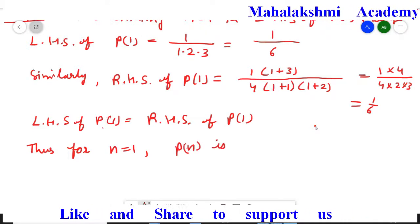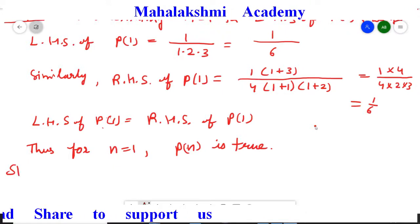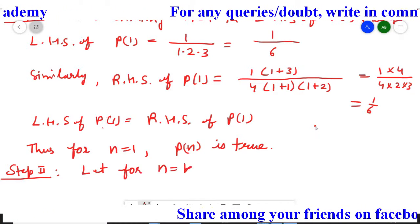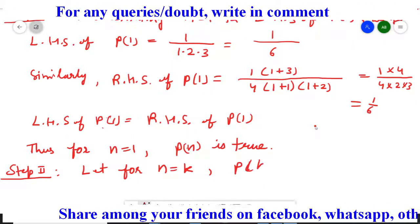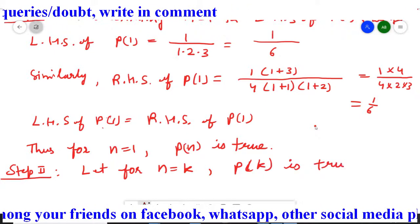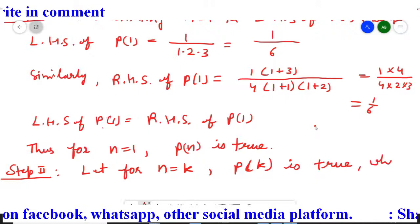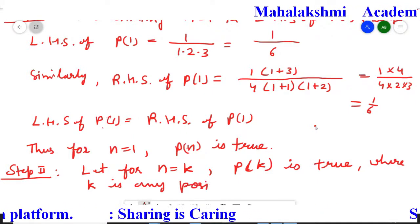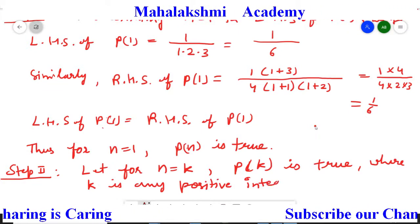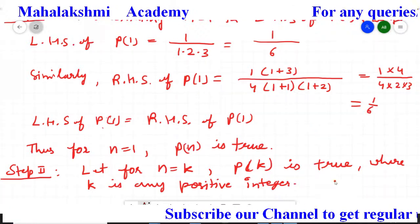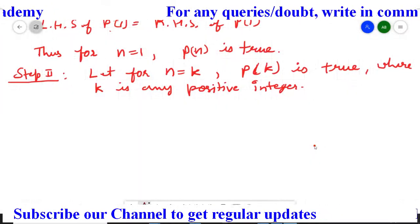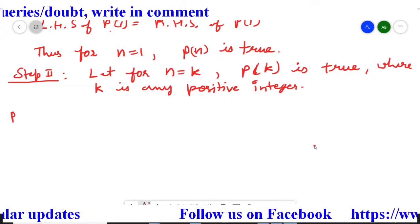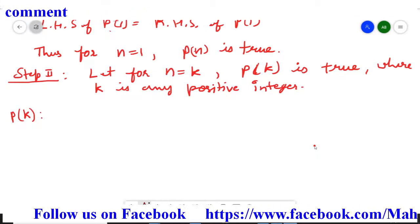Now we will prove the second step. In step 2, we assume: let for n equal to k, statement Pk is true, where k is any positive integer. So in the Pn statement, wherever we have n, that n we replace by k.